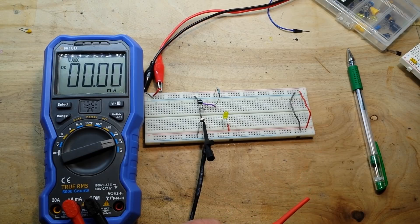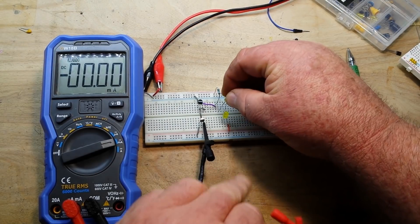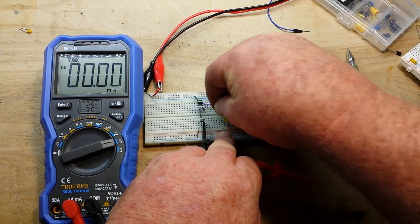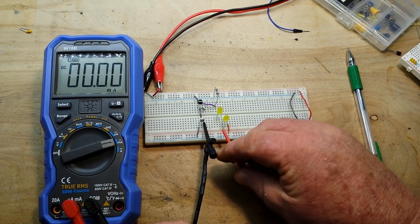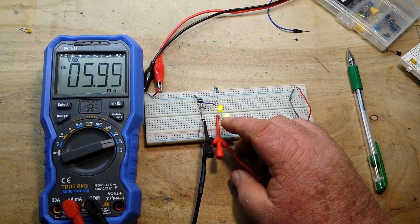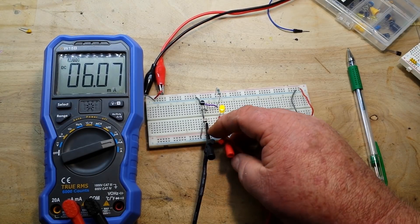Now I am going to pull that out and I am going to vary our load by adding another LED in series with the first one. Then we will hook them up and you can see we are still at about 6 milliamps.